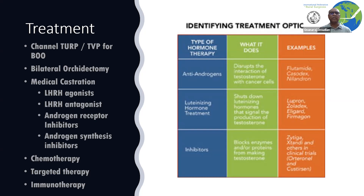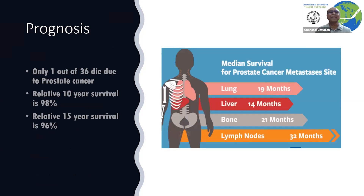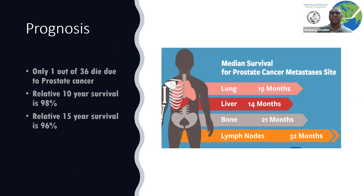Recently, we have chemotherapy, targeted therapy, and immunotherapy, though these are not yet widely established. The good news is that prostate cancer has a very good prognosis. Even patients who have metastasis in the lungs, liver, and bone still have a fairly good prognosis. Only one out of 36 patients with malignancy dies from it, as patients can die from other conditions or old age. The relative 10-year survival is 98% and 15-year survival is 96%, which is very good for a malignancy.